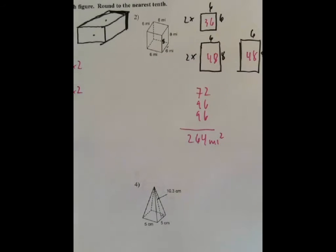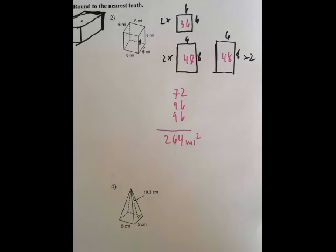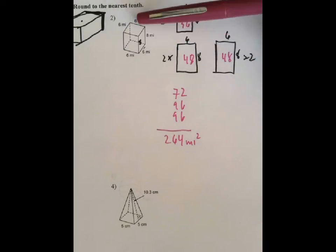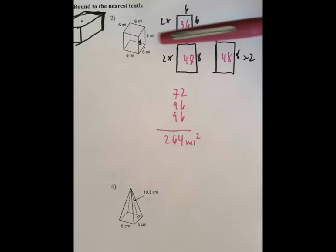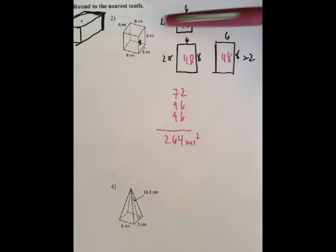Those add up to 264. Here's the right side, here's the front side and the back side, here is the left side and the right side, here's the top side and the bottom side. That's how that goes.